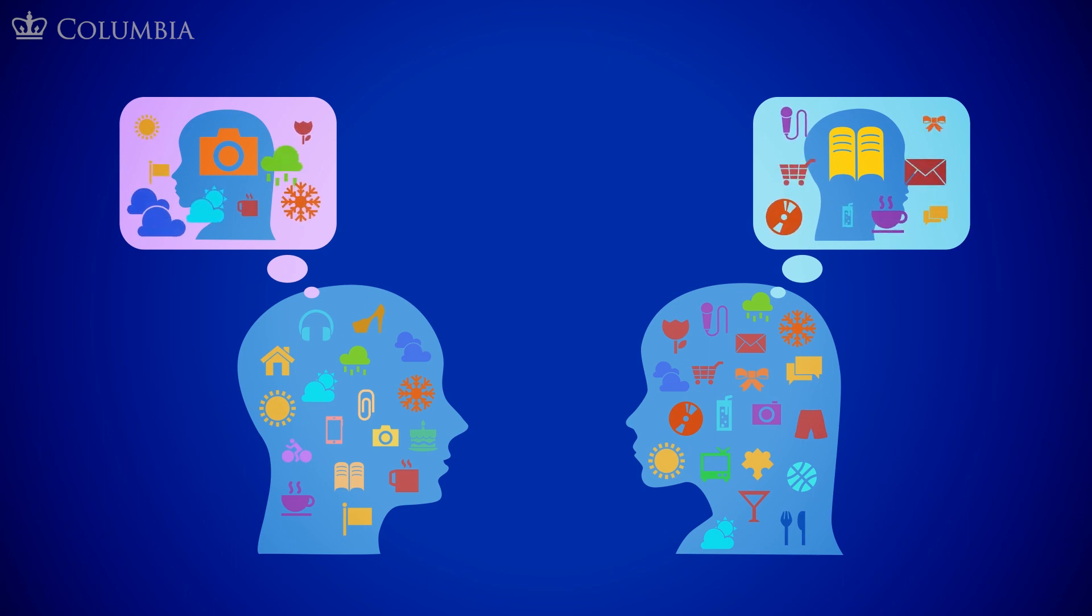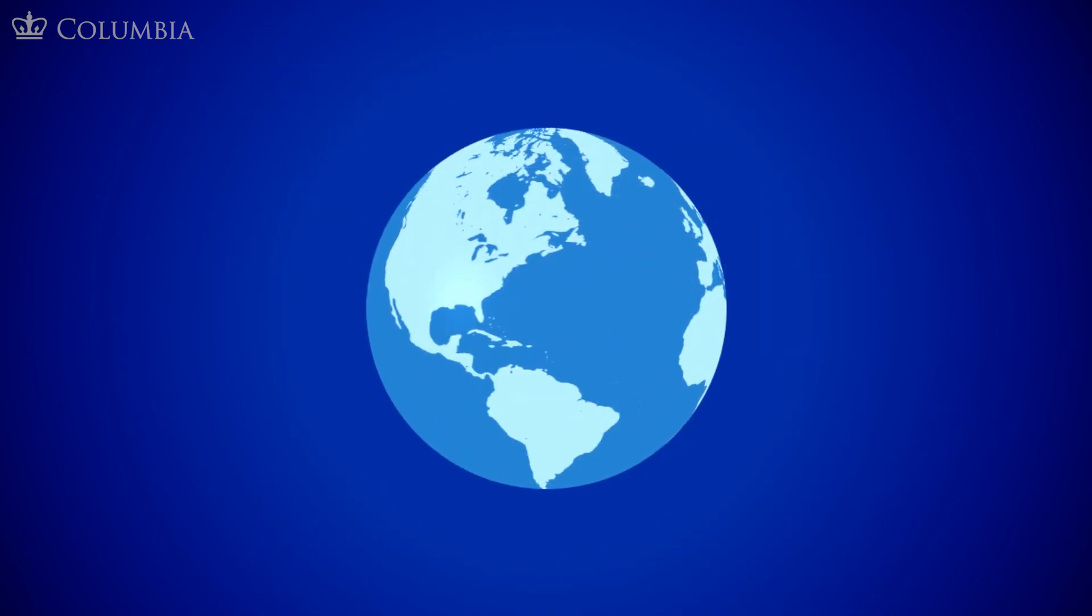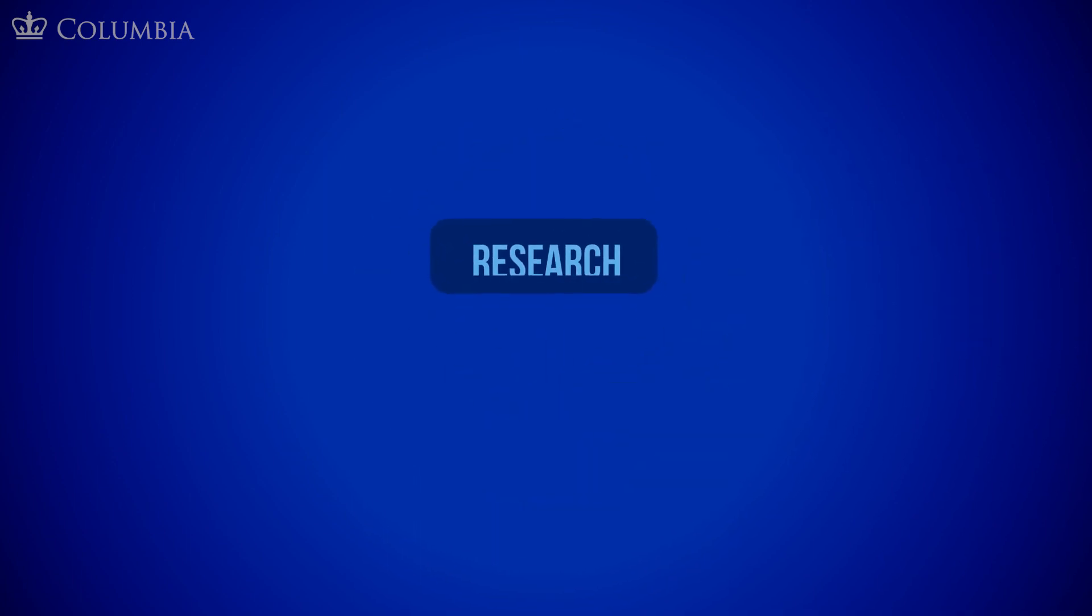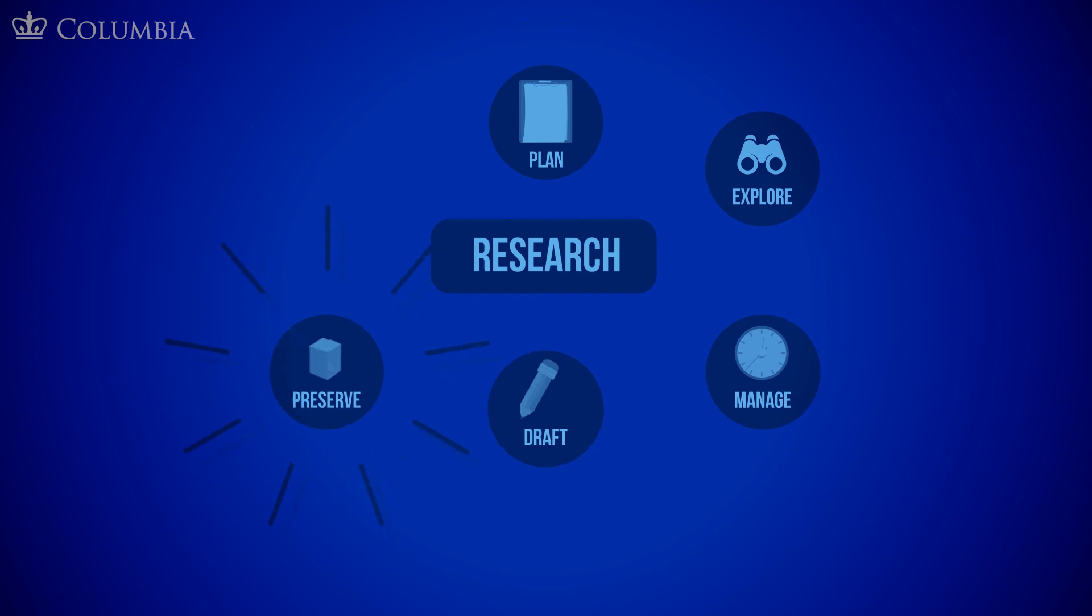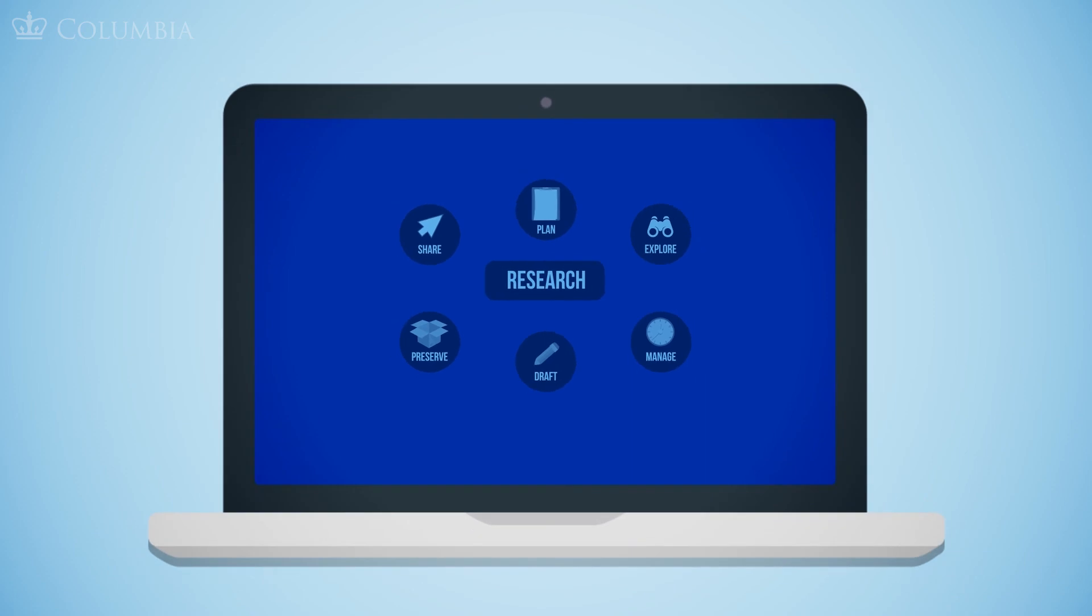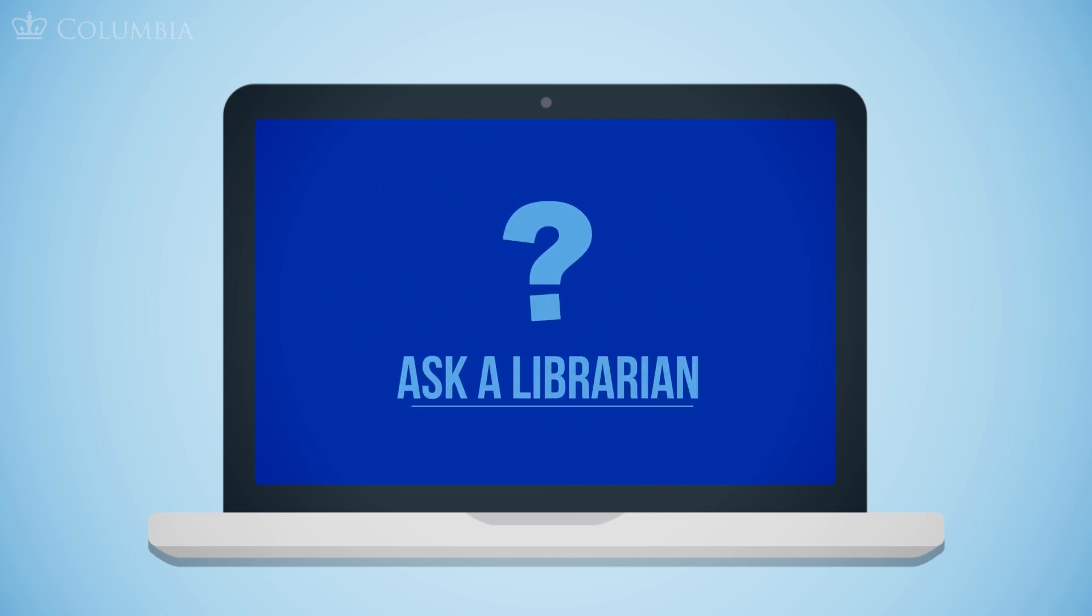As researchers, we have an obligation to ourselves and our communities to address when bias, both implicit and explicit, finds its way into our research. We hope this video has offered some insight into the research cycle and how to best recognize bias. We encourage you to familiarize yourself with the other videos and resources in the From Books to Bytes series, as they all delve deeper into the resources available to you at the Columbia University Libraries. And remember, you can always consult with your subject librarian and visit our Ask a Librarian service on the Columbia Libraries website.